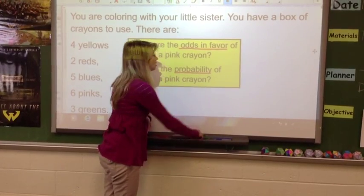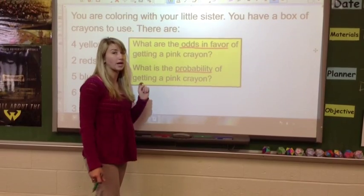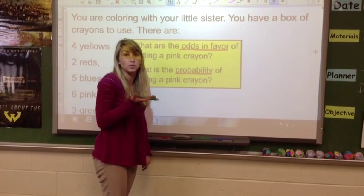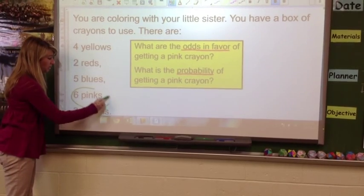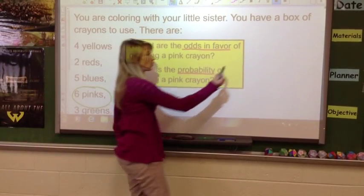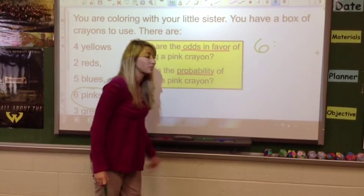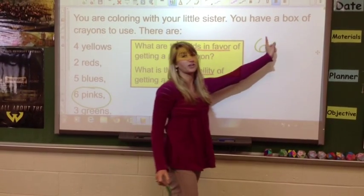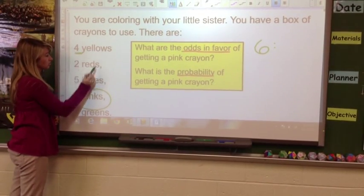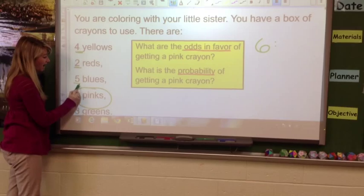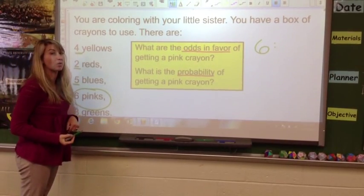Let's try this. The first thing we need to do for odds in favor of getting a pink crayon is to realize how many chances do we have to get a pink crayon. We can see that we have six pinks, so that means we have six options of getting a pink crayon. The other side of odds in favor is how many other options do we have? We have four yellows, two reds, five blues, and three greens.